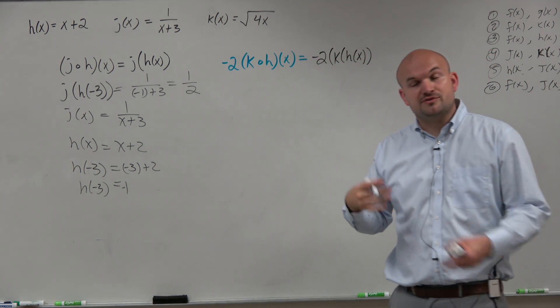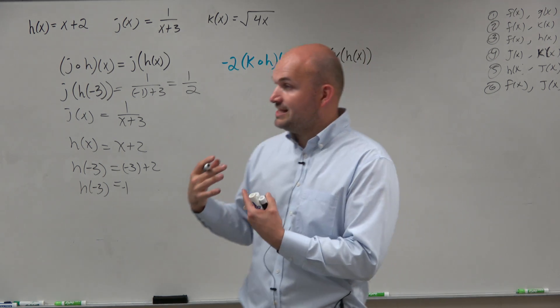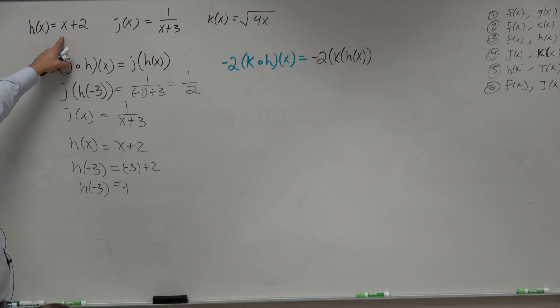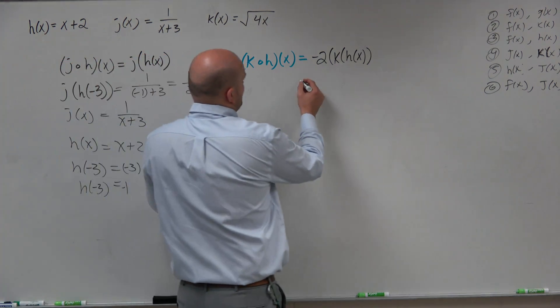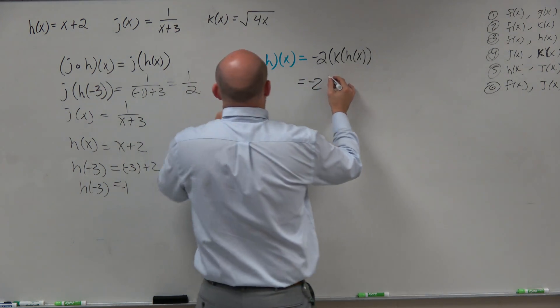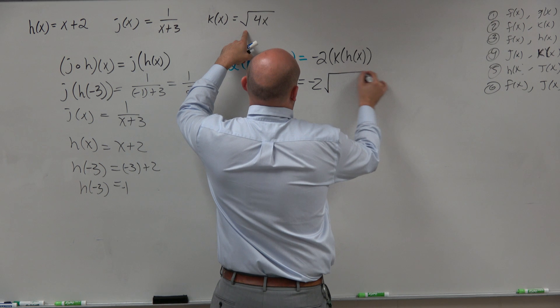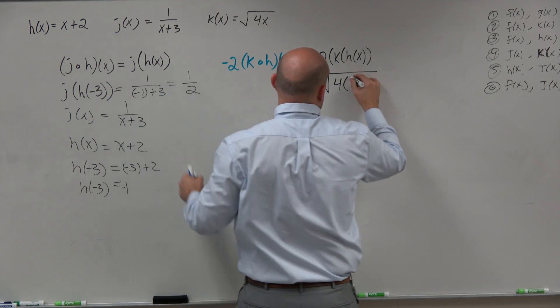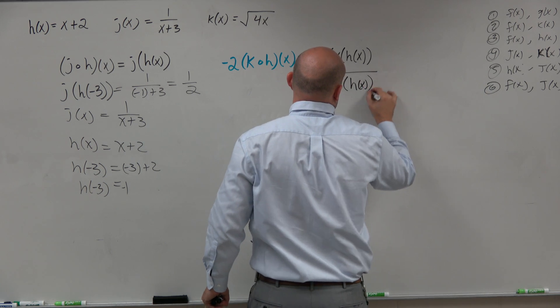So again, what we're doing is we're plugging in h of x into k. So we have h of x right here, and we're plugging h of x into k of x. So don't worry about the negative 2 at the moment. Just know that you're going to take k of x, which is the square root of 4, and then instead of x, we're replacing that with h of x, okay?